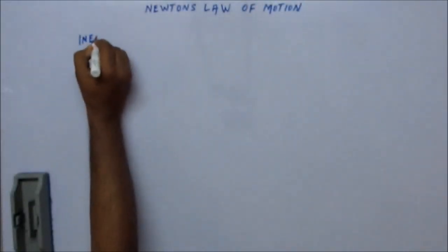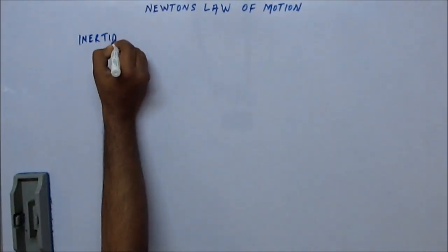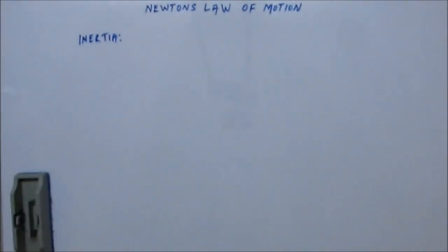The first one would be inertia. Inertia is the resistance of any physical object to any change in its state of motion or rest. It is a tendency of objects to remain at rest if it is already at rest, or to keep moving in a straight line at constant velocity.